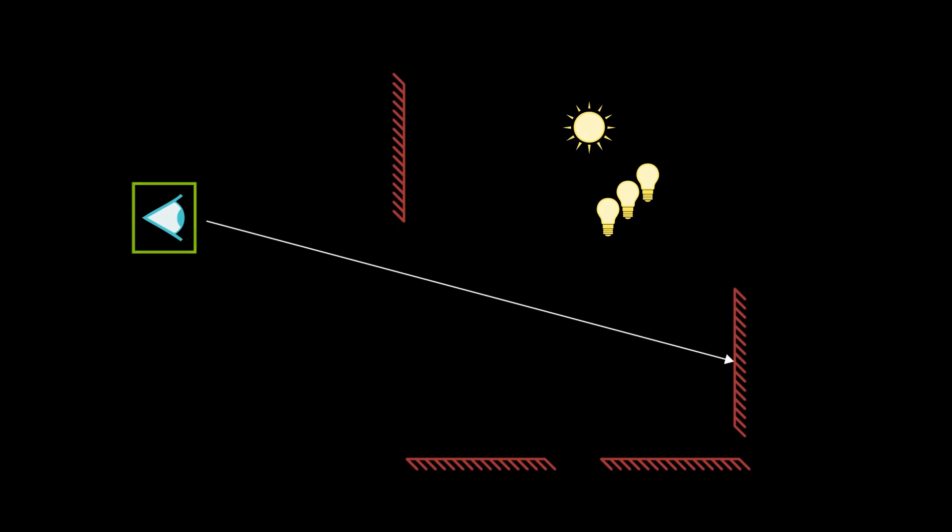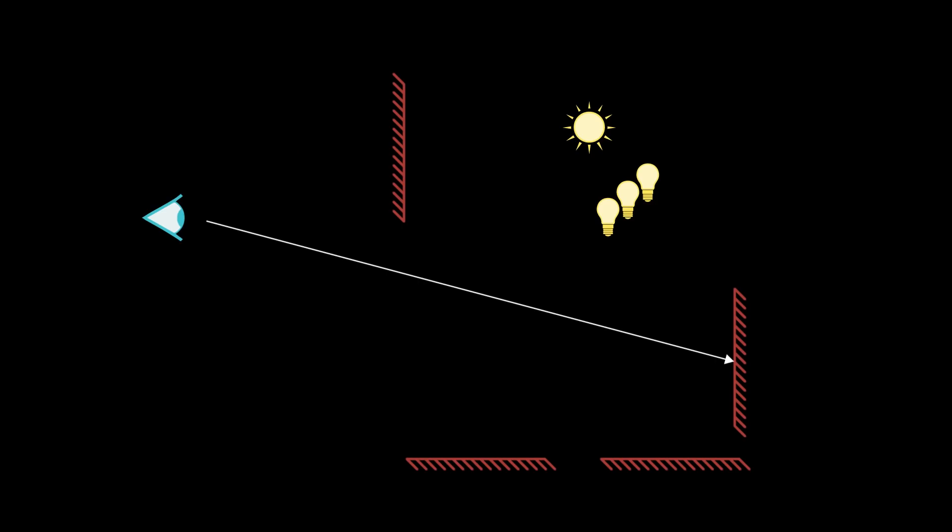Here we have a simplified diagram that will help us explain the opaque reflections. We have an eye, or a camera, and we're going to trace a primary ray to a surface — in this case, an opaque surface. When that ray intersects the surface, we're going to evaluate for its material properties, things like roughness and specularity. That, in turn, will help us determine both the length and the direction of our reflection vector.